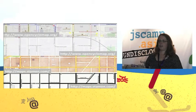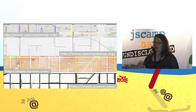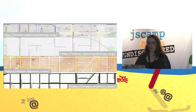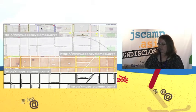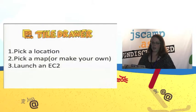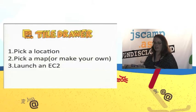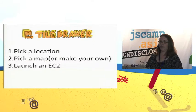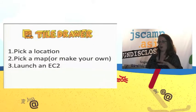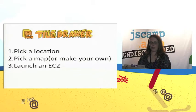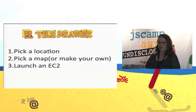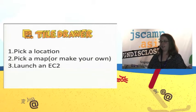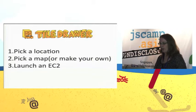To host custom maps yourself, there are a couple of options. One is called TileDrawer — relatively simple. You pick the location you want to host map information from, pick a map style or make your own, and then launch an EC2 instance with your Amazon credentials.